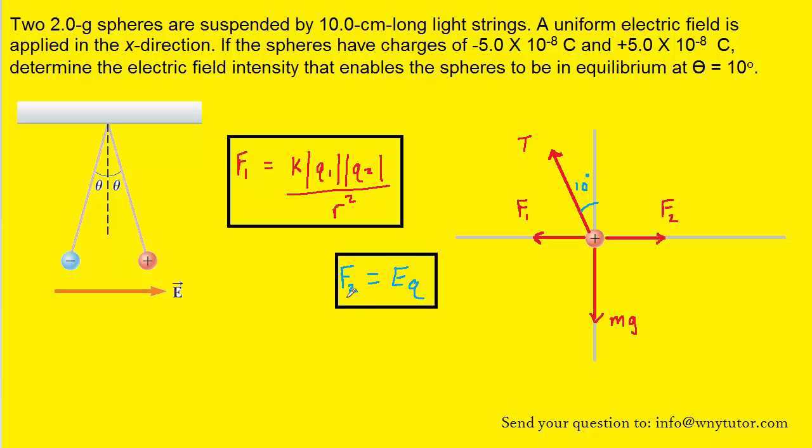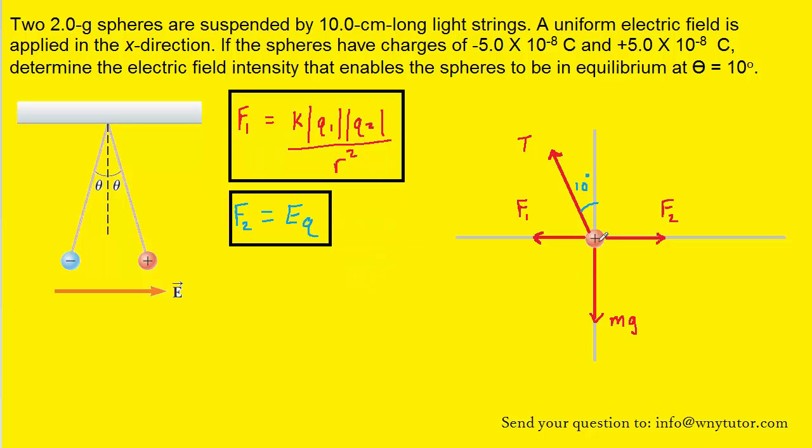Now, we're going to hold on to the results for F2 and also F1 and use them later on in the problem. Because the positive charge is in equilibrium, we know that the sum of the forces acting on it is equal to zero. And that idea would apply in both the y and the x direction. We're going to begin by filling in the forces in the y direction.